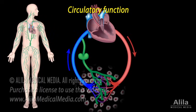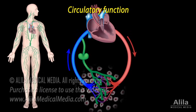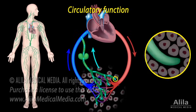Unlike the blood circulatory system, which is a closed loop, the lymphatic system is a one-direction, open-ended network of vessels. Lymphatic vessels begin as lymphatic capillaries made of overlapping endothelial cells. The overlapping flaps function as a one-way valve.